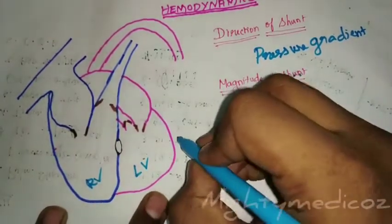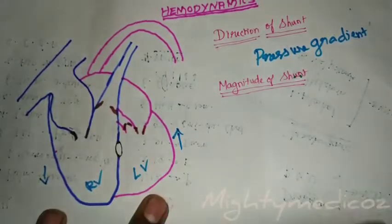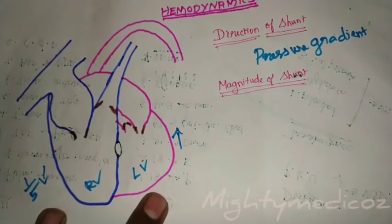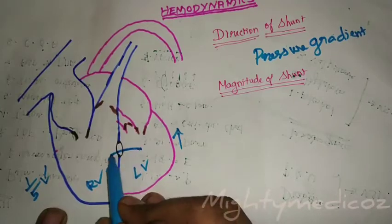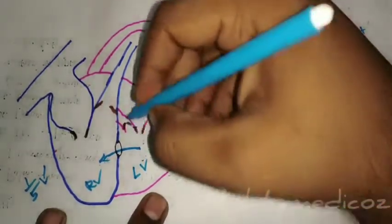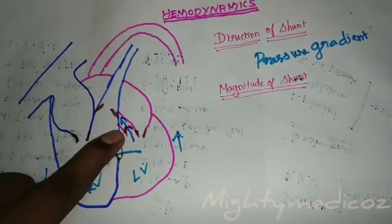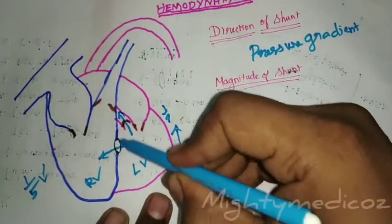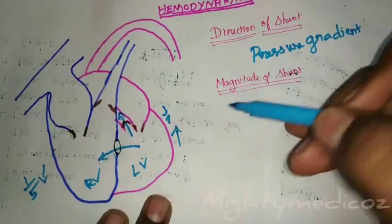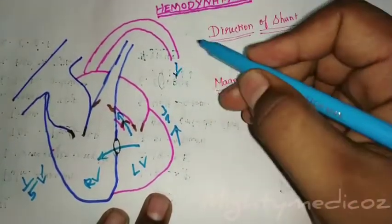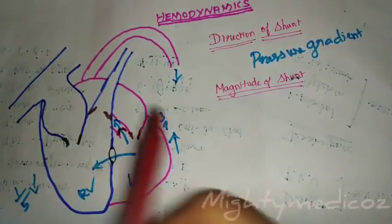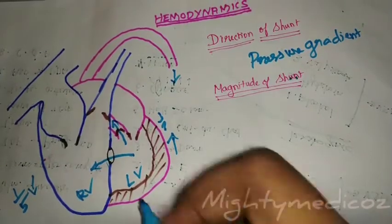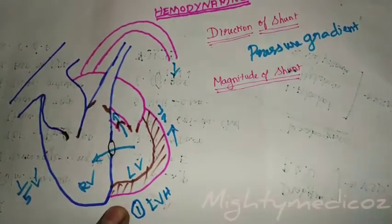In the initial stages of VSD, the pressure in the left ventricle is higher compared to the right ventricle — approximately one-fifth of left ventricular pressure is present in the right ventricle. Therefore, blood goes from the left ventricle to the right ventricle. The physiological blood that should go to the aorta and systemic circulation instead shunts through the defect, causing the left ventricle to pump more. This results in left ventricular hypertrophy, which is the first pathological change in VSD.